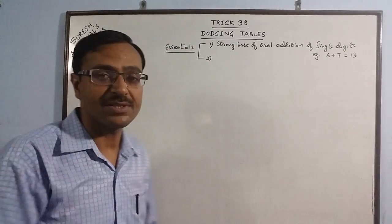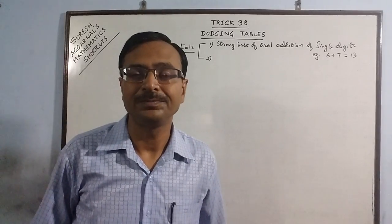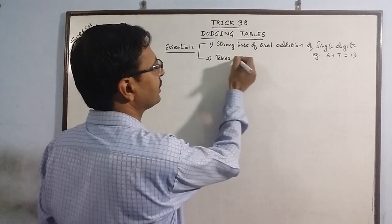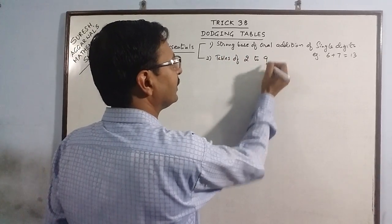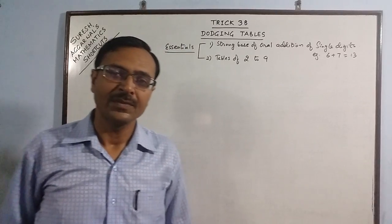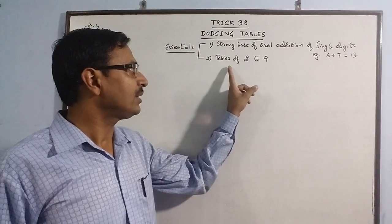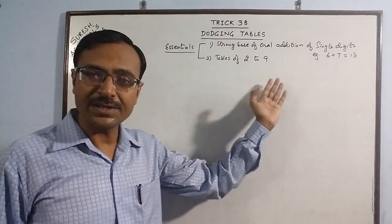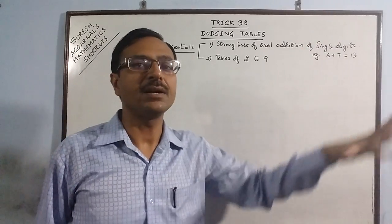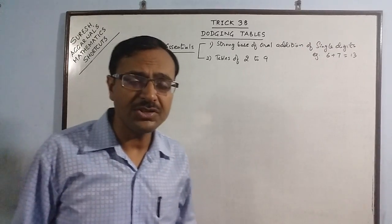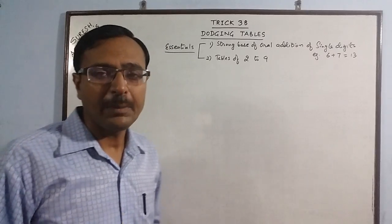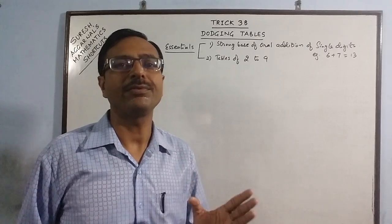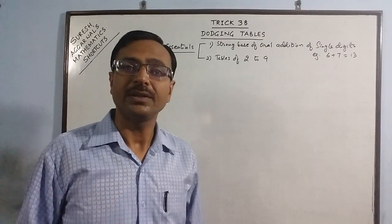The second one is the tables of 2 to 9, that is single digit numbers. If the child is having comfort in dealing with the tables of single digits and adding the single digits together, then this is sufficient for enabling him to write any product from in between the table of any 2 digit number say up to 30.